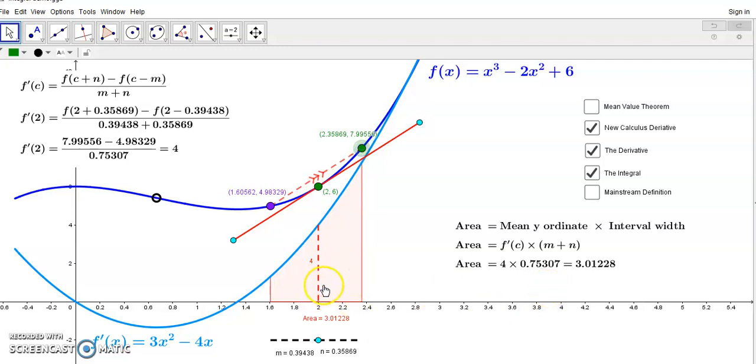So, we always get the correct area, and you can check that by comparing this value to this value here. So, this has been determined by the software, and this here is determined by taking the product of these two arithmetic means, the f prime of c, and the interval width.